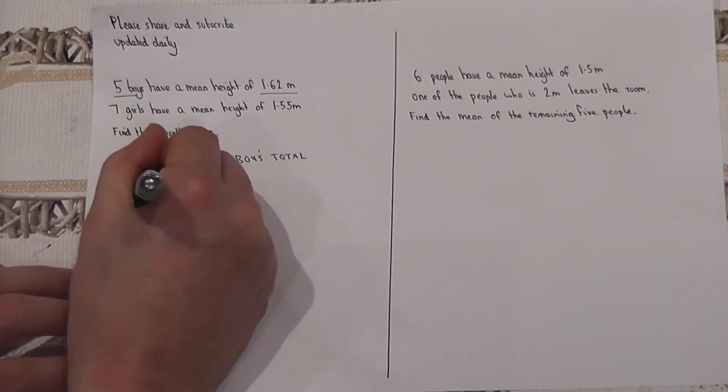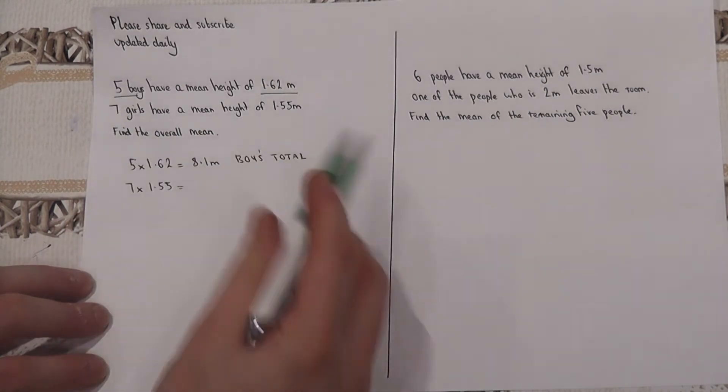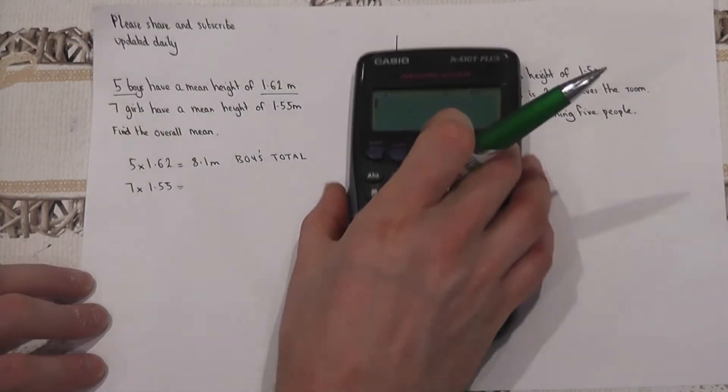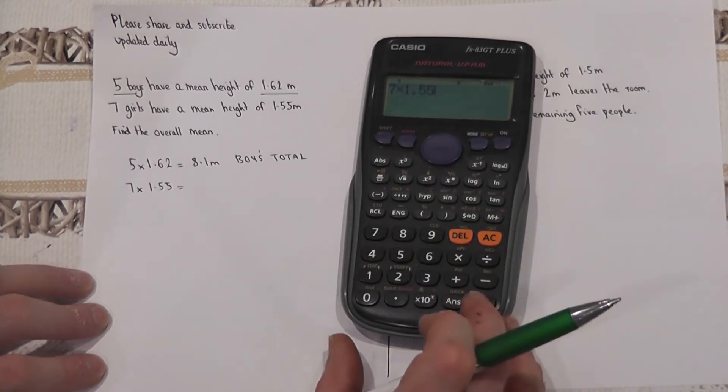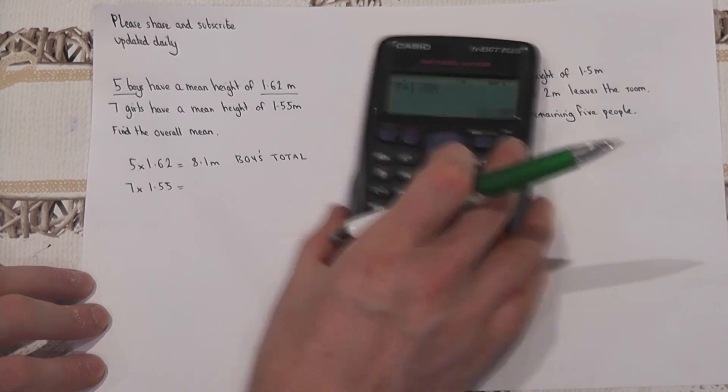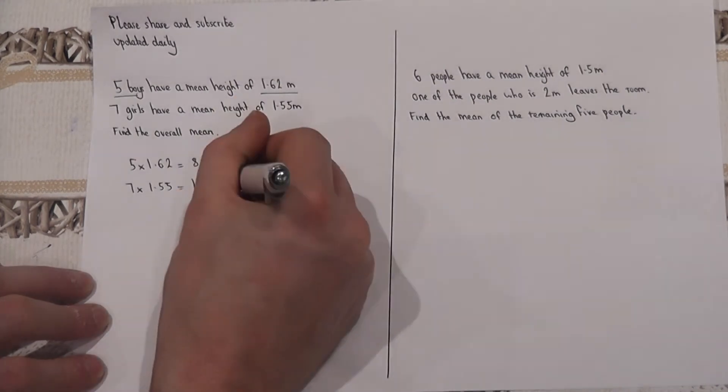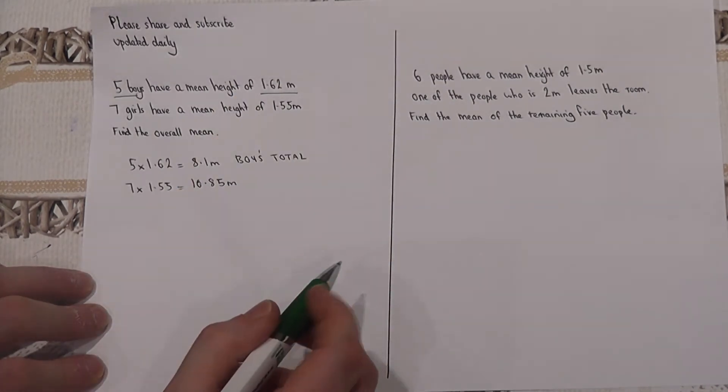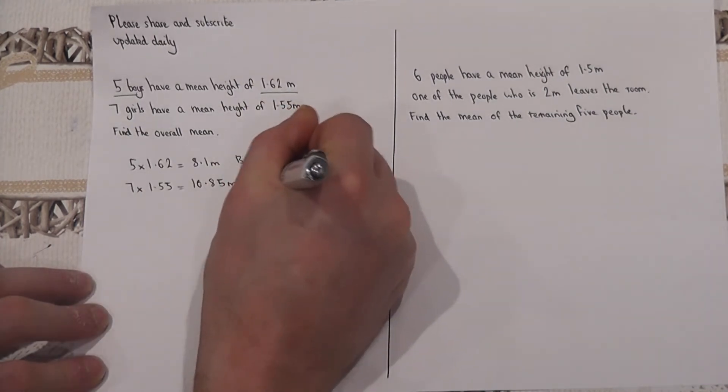Now there are seven girls with an average height of 1.55. So if I do seven lots of 1.55, that will tell me the total height of all of the girls. So 10.85. But the girls total is higher than the boys, not because the girls are taller but because there are more girls there, and this is the girls total.